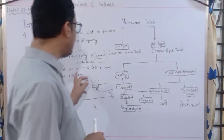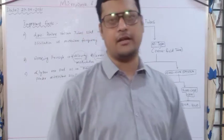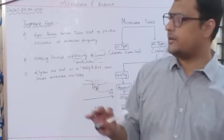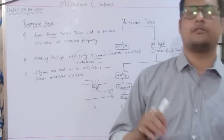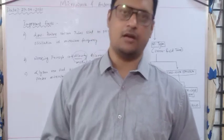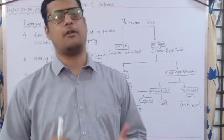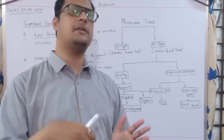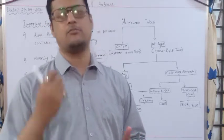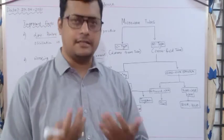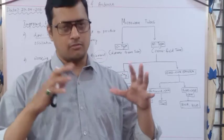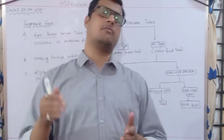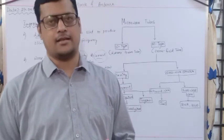Klystrons are basically used as an amplifier. Now we will discuss the reflex klystron — how it works, its working principle, its features, how to analyze it, and what terms are used to identify each part. We will also discuss how electrons are velocity modulated, how electrons are energized, how power is calculated, what modes are there, how modes help generate power, and what happens when the number of modes increases.